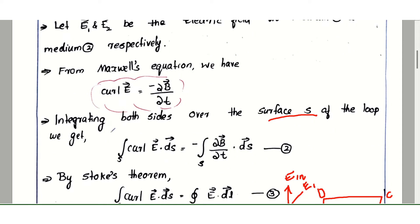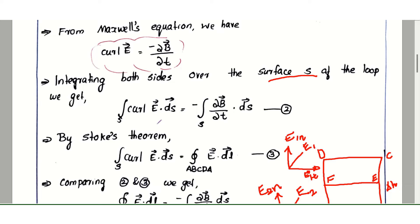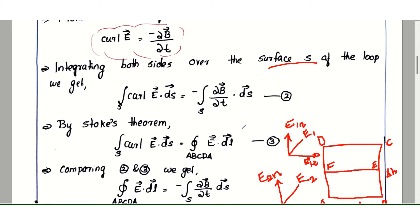We are going to apply Stokes' theorem. The surface integral of curl of E dot dS equals the line integral of E dot dL over the closed loop ABCDA. This is equation number 3.